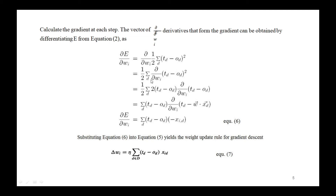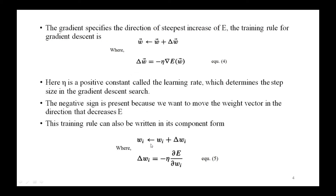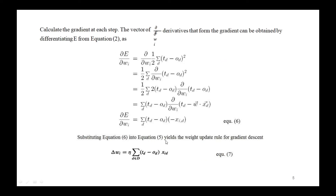This simplifies to one-half summation of delta by delta w-i of (t-d minus o-d) squared. Further simplifying — taking the factor of two — we get delta E divided by delta w-i equals summation of (t-d minus o-d) times negative x-i-comma-d, over all d in training set D. Substituting this result into the weight-update equation yields the weight update rule for gradient descent: delta w-i equals eta times summation over d of (t-d minus o-d) times x-i-d.